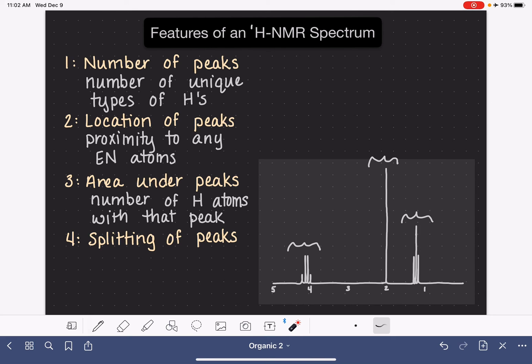Last but not least, the splitting of the peaks gives us information about the number of neighboring hydrogen atoms. So right here, the number of hydrogen neighbors, the number of hydrogen atoms that are near the hydrogen atoms that are generating that peak.